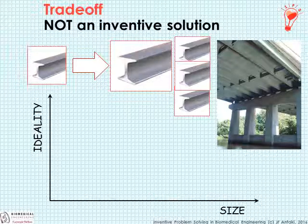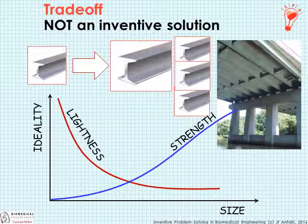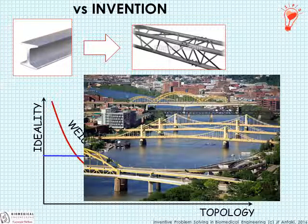On an x-y plot where the y-axis is ideality and the x-axis is size, making it larger increases strength — good — but also makes it heavier, decreasing lightness and increasing cost. That's a trade-off. An inventive solution would reduce the weight and yet preserve or increase the strength. In this case, we've altered the topology completely: we've abandoned the I-beam and adopted a truss. This is a potential invention, it's patentable, and it's not a coincidence that we see trusses instead of gigantic I-beams in the bridges around Pittsburgh.